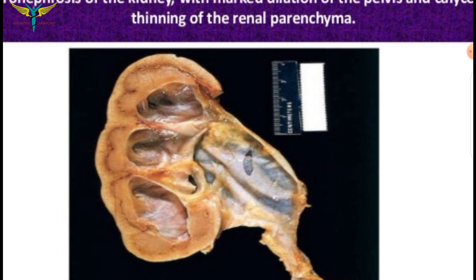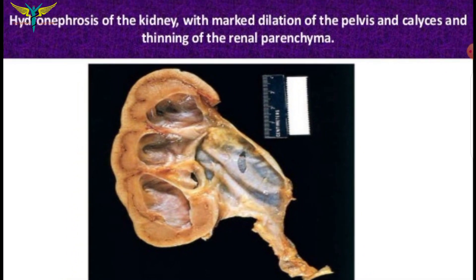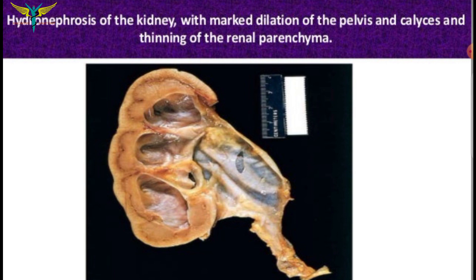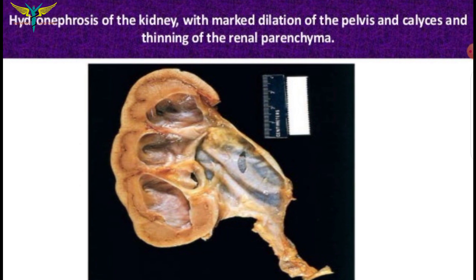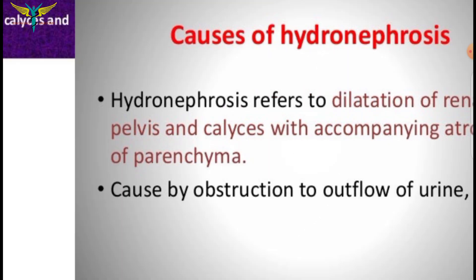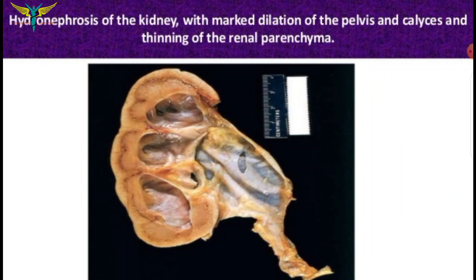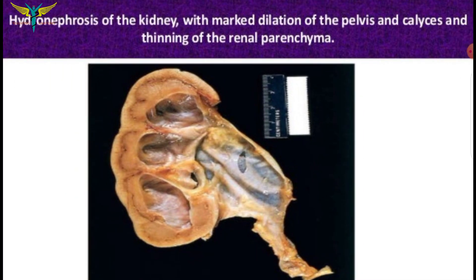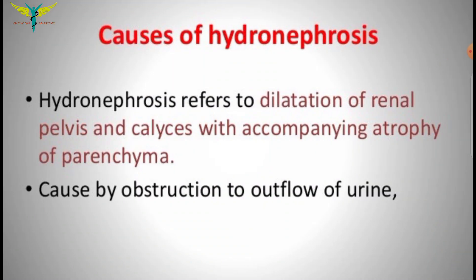Hydronephrosis of the kidney is seen in this diagram with marked dilatation of the pelvis and calyces. Due to the dilatation, we can note the thinning of the renal parenchyma. Hydronephrosis refers to dilatation of the renal pelvis and calyces with accompanying atrophy of the parenchyma, which becomes thin and finally atrophies.